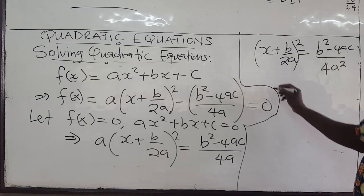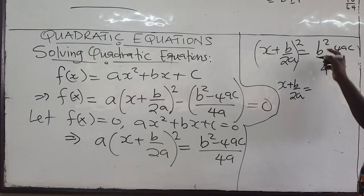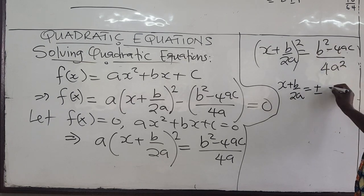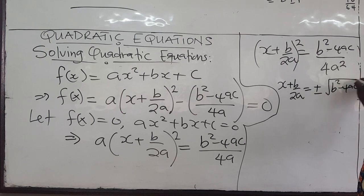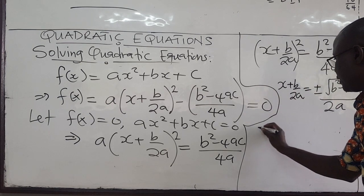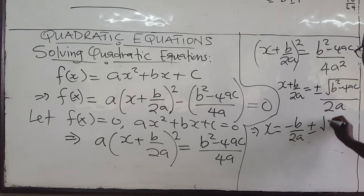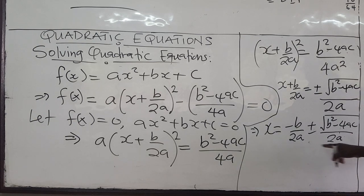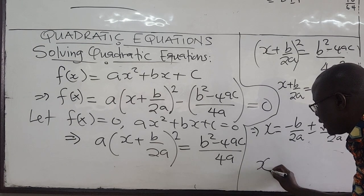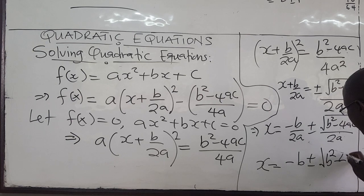When we take the square root, we get x + b/2a = plus or minus the square root of (b² minus 4ac) all over 2a. We are solving for x, so we bring b/2a to the other side, giving us x = negative b over 2a, plus or minus the square root of b² minus 4ac, all over 2a.